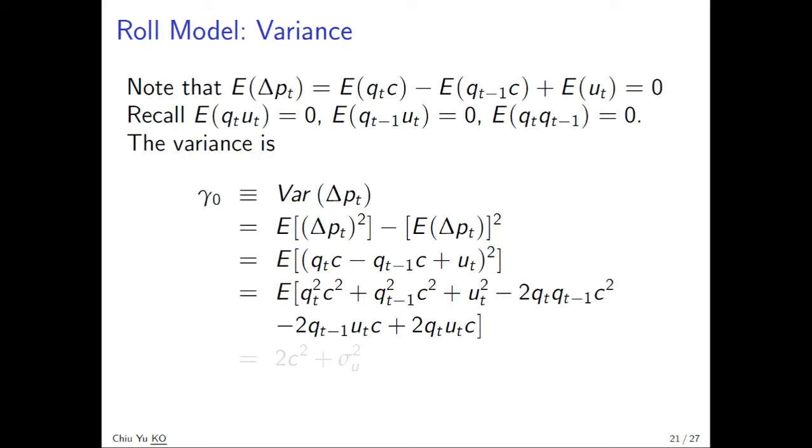The first term Q_t squared is equal to one, we have shown. And similar, second term is also one. So this gives us 2C squared, and second term u_t squared gives you sigma squared u. And the rest three terms are actually zero because, look at the second line of the recall. So recall everything is zero. So that's why we have this.